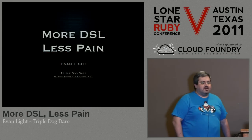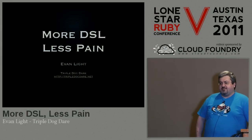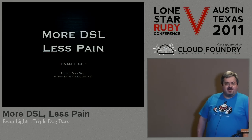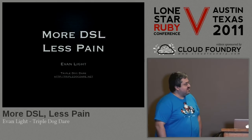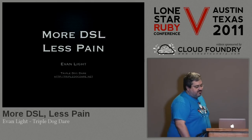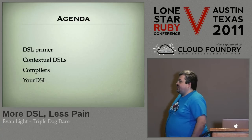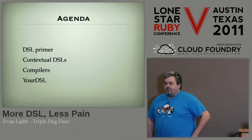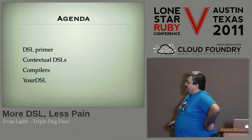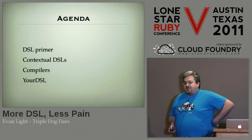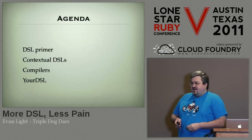My name is Evan Leight. I'm here to talk to you about DSLs and how to write them less painfully. Steven already set me up just a little bit to talk about DSLs. We're going to talk a little bit about metaprogramming. Here's the agenda: I'm going to give you a really quick primer on different kinds of DSLs you can write in Ruby. We're going to talk specifically about a certain kind of DSL called contextual DSLs.